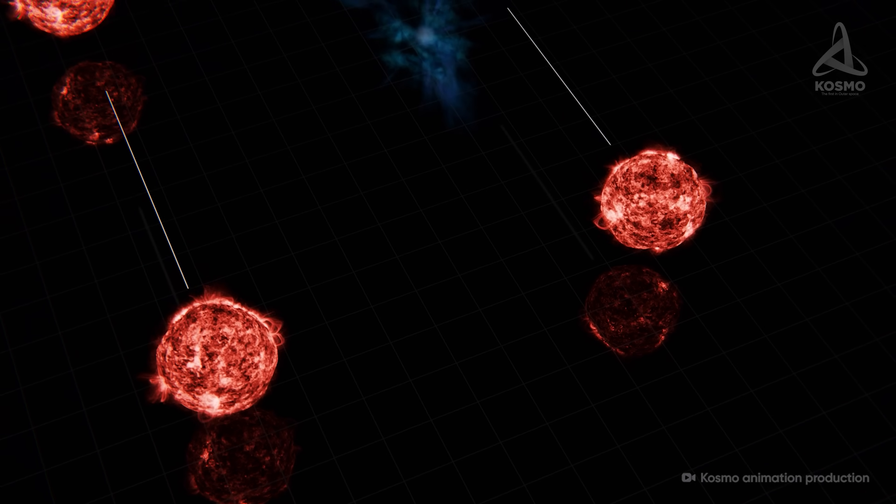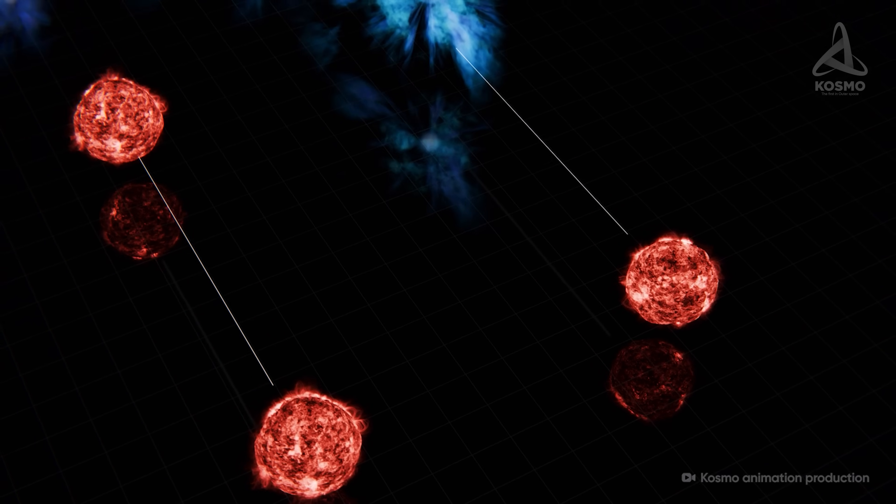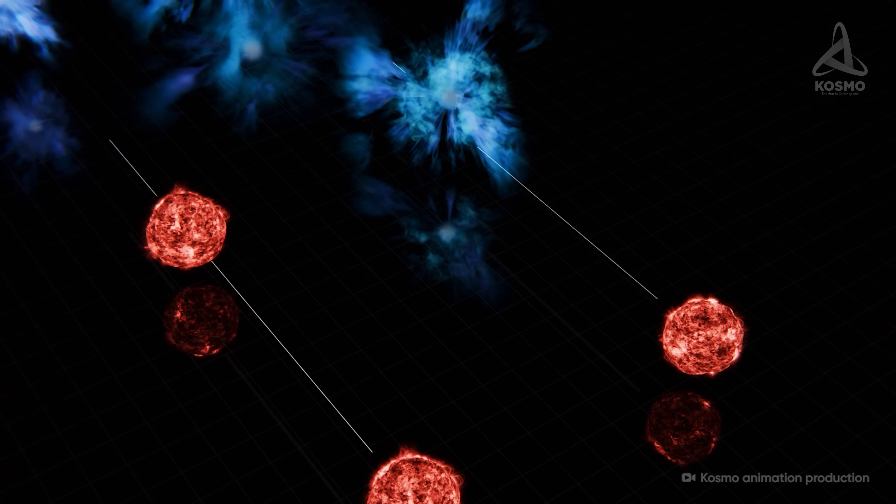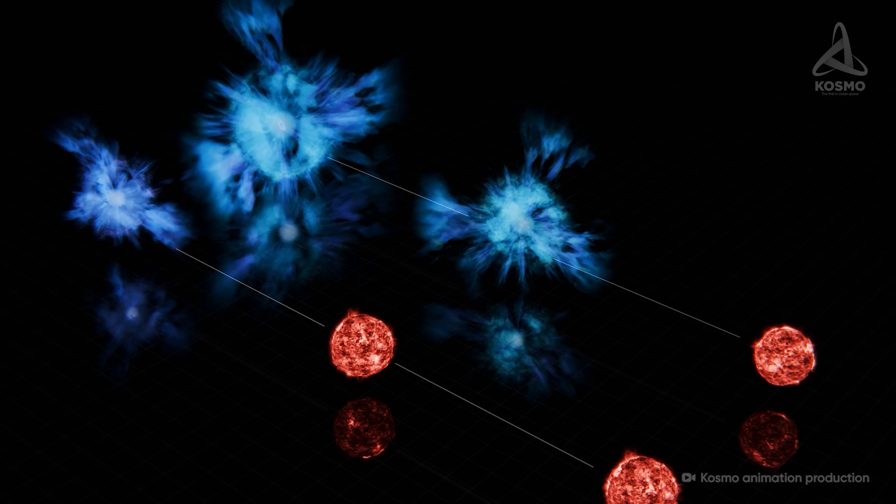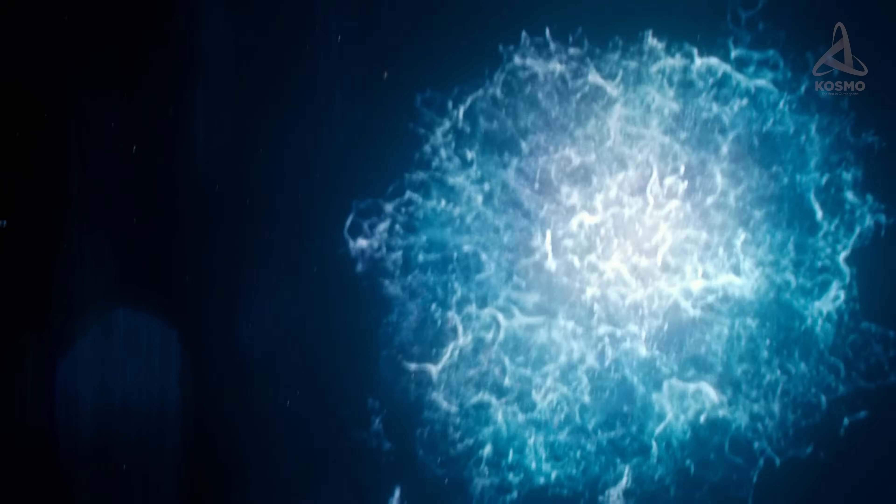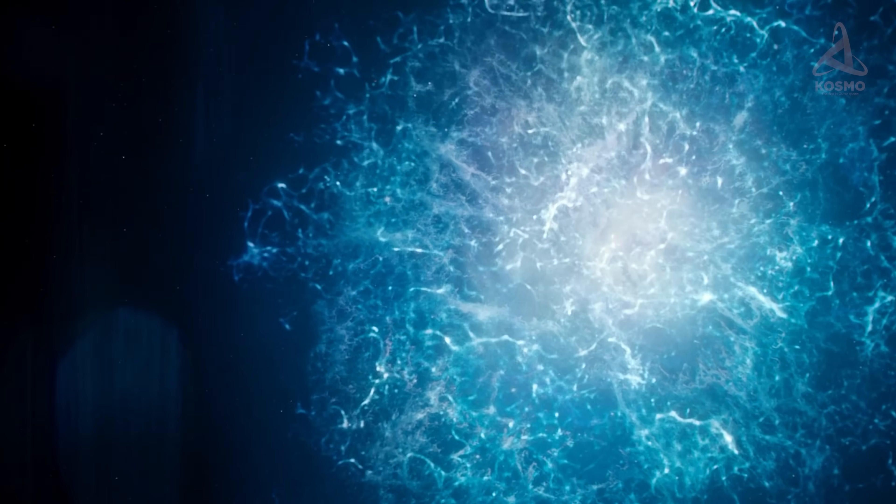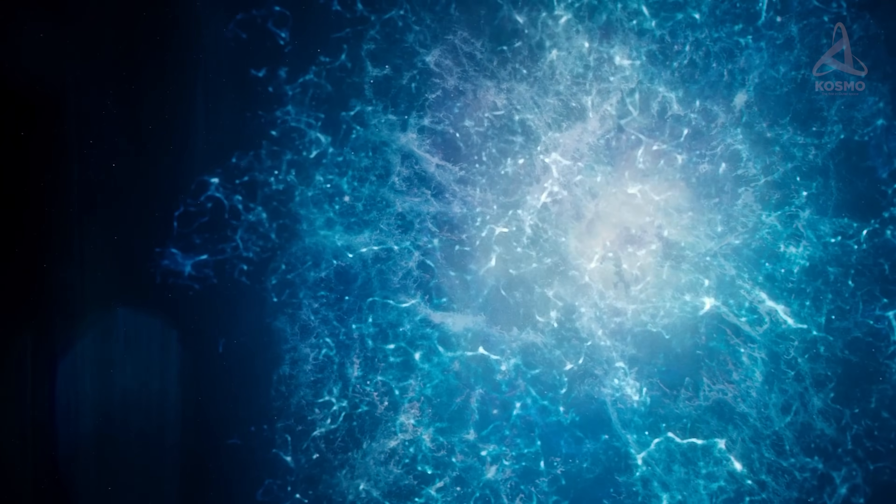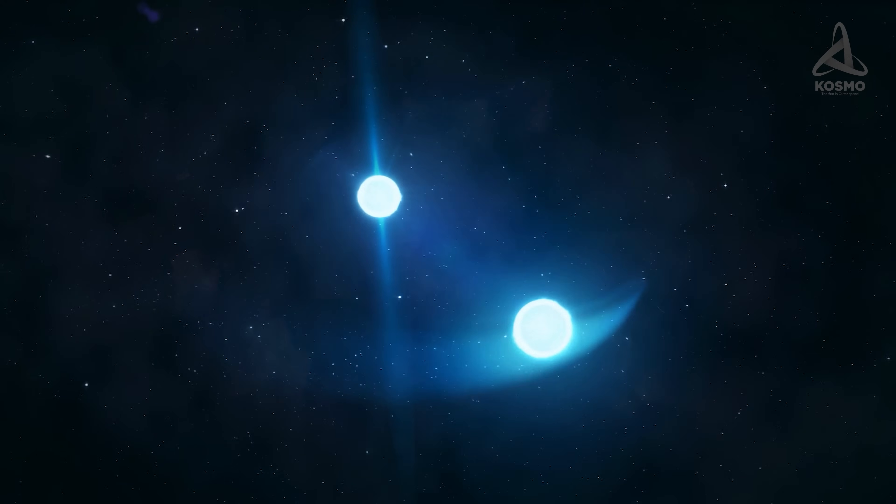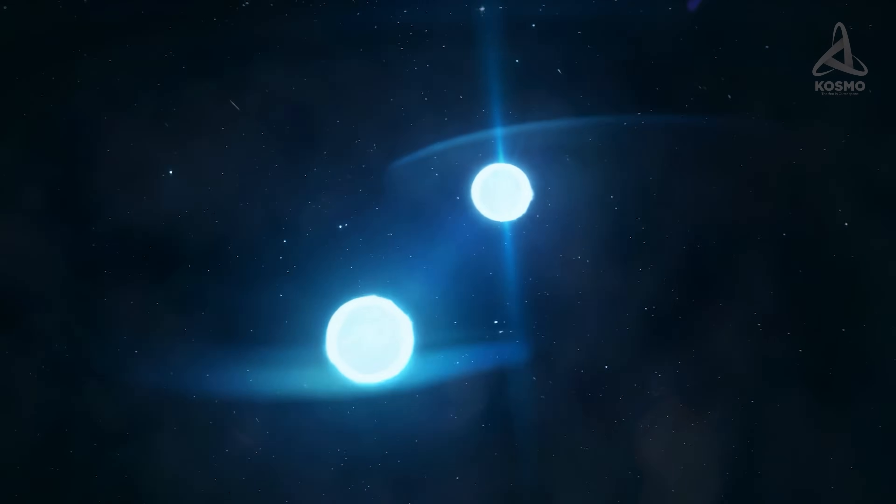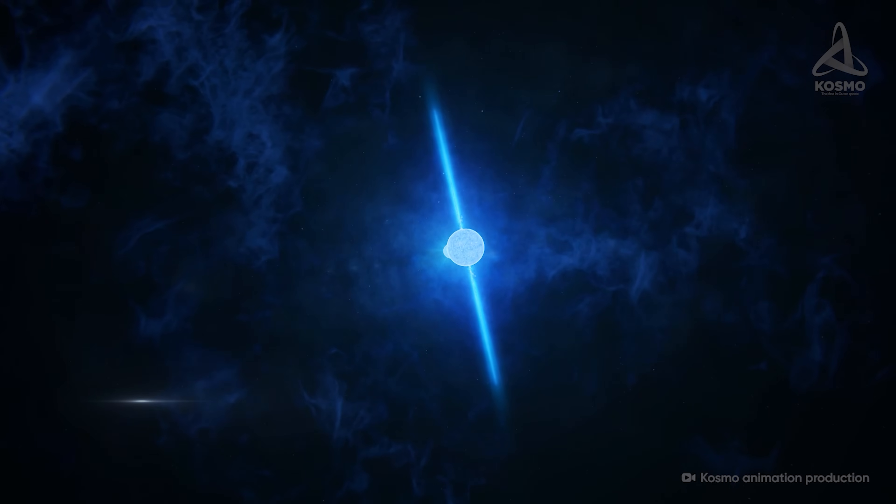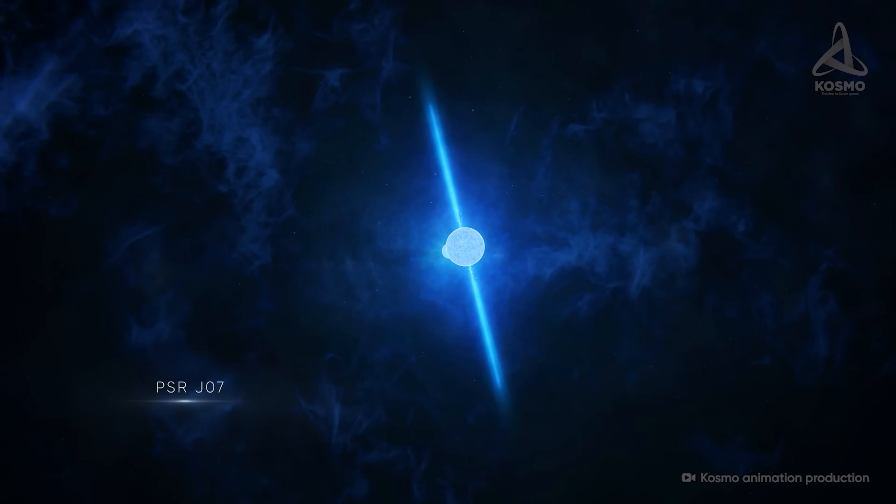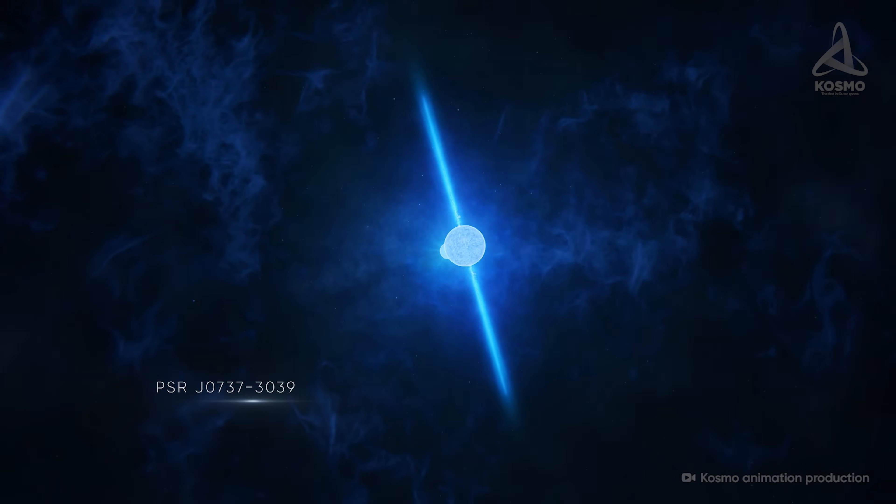This happens when two similar stars synchronously approach the end of their life cycle, and the explosion of one of them triggers the collapse of the second. Because of the loss of energy during the transformation, the remnants of stellar nuclei closely converge, which causes their mutual velocity to grow to enormous values. And according to today's concepts, this is how the amazing system called PSR J0737-3039 was formed.